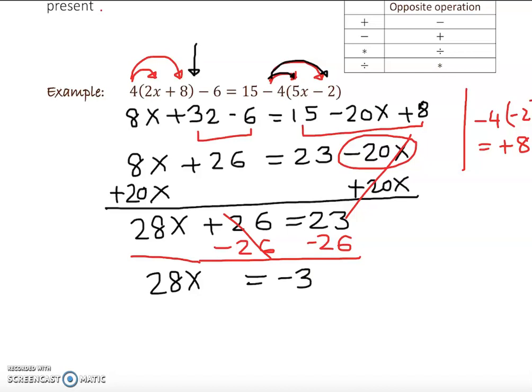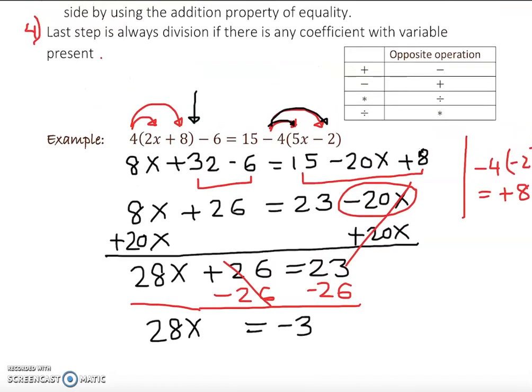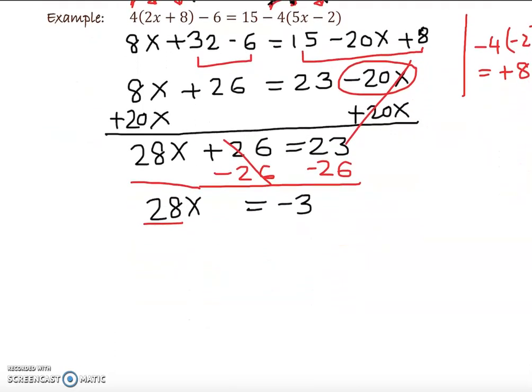Finally, the last step I want to show you that I mentioned up here: last step is always division if there is any coefficient present. Clearly you see the coefficient we have is 28 down here. So we are going to actually divide by 28 on both sides.